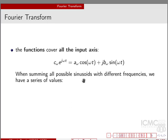Cosine and sine both cover all the input axes, meaning I can compute cosine and sine for every value. We have cosine(omega·t) plus sine(omega·t), with coefficients a and b. Those coefficients define, as in the polynomial, the contribution of the cosine and sine functions to the signal. The values a and b are the coefficients we compute using the formula of the Fourier transform.